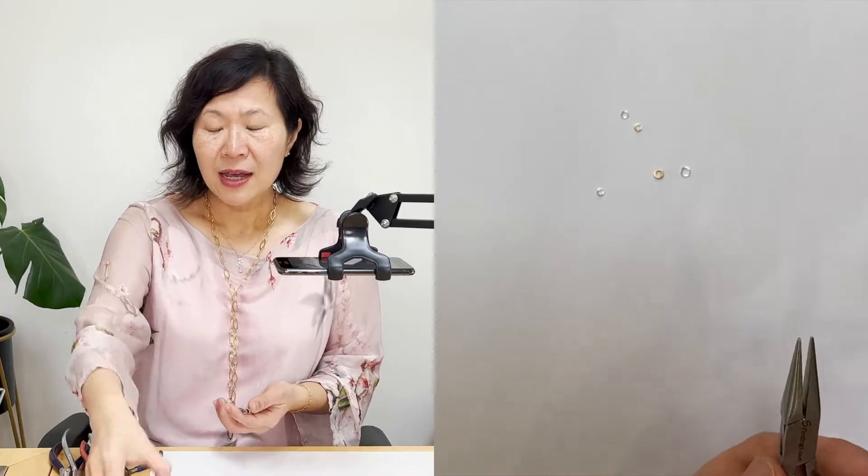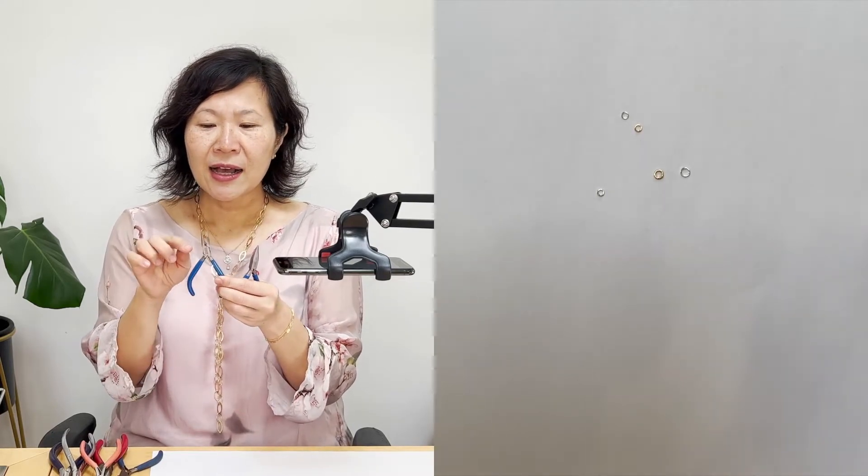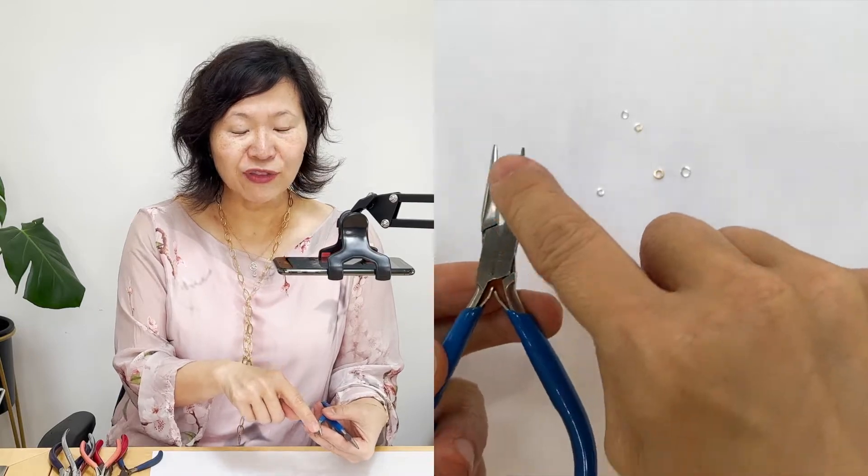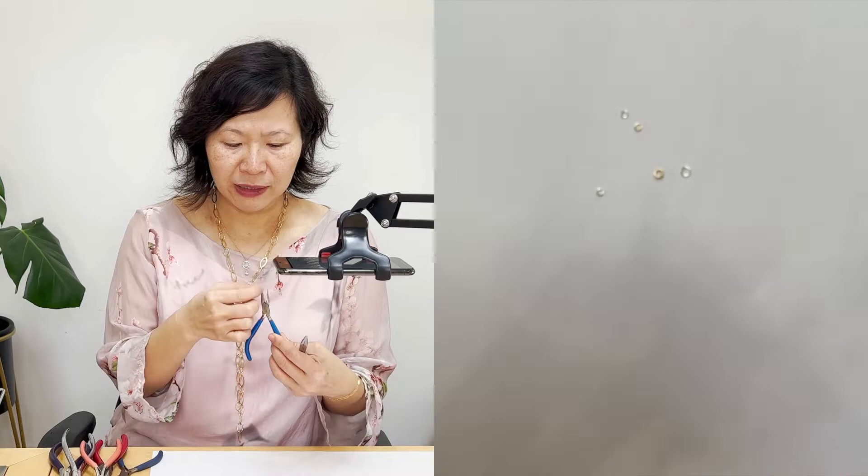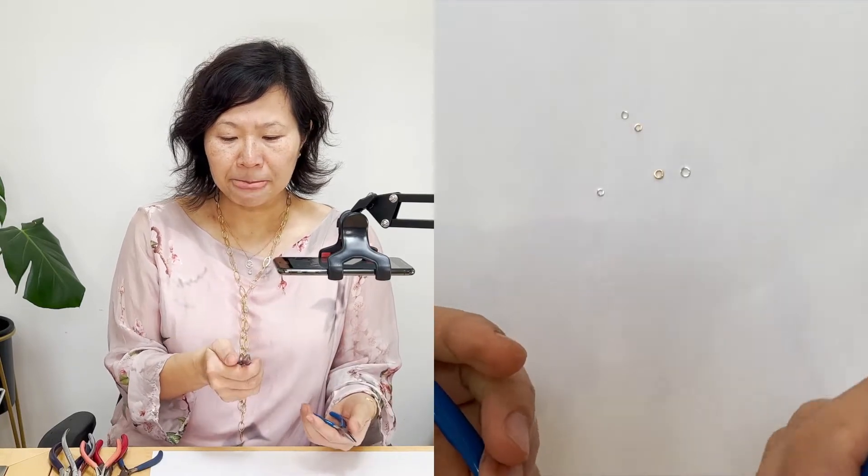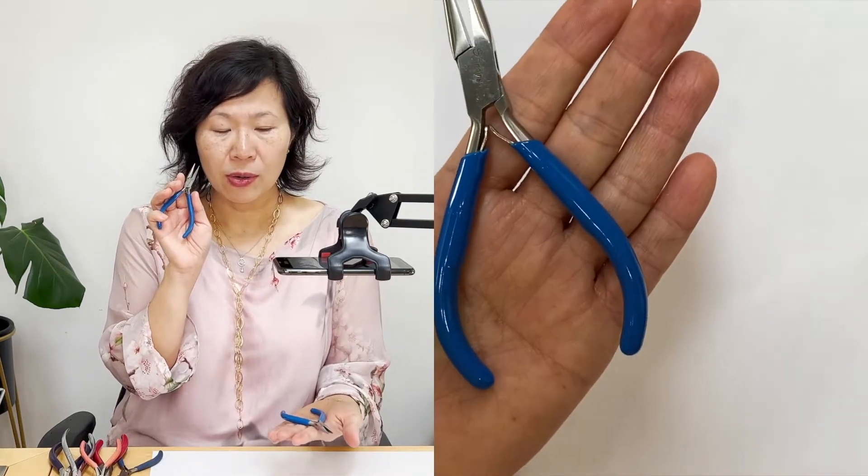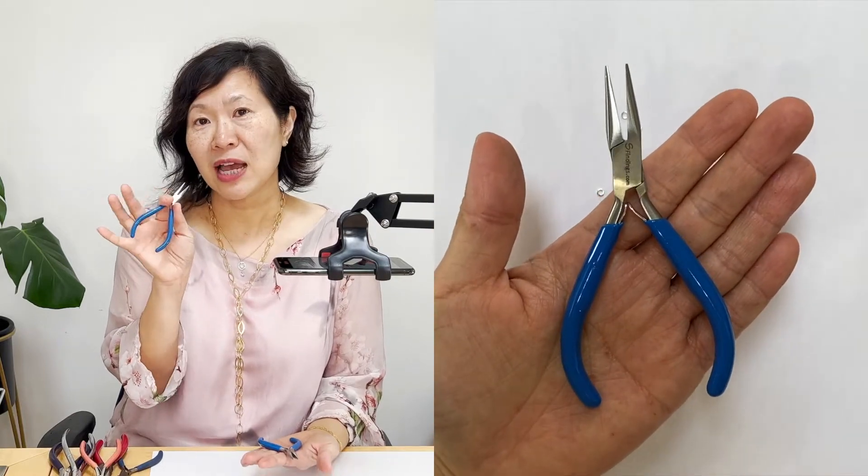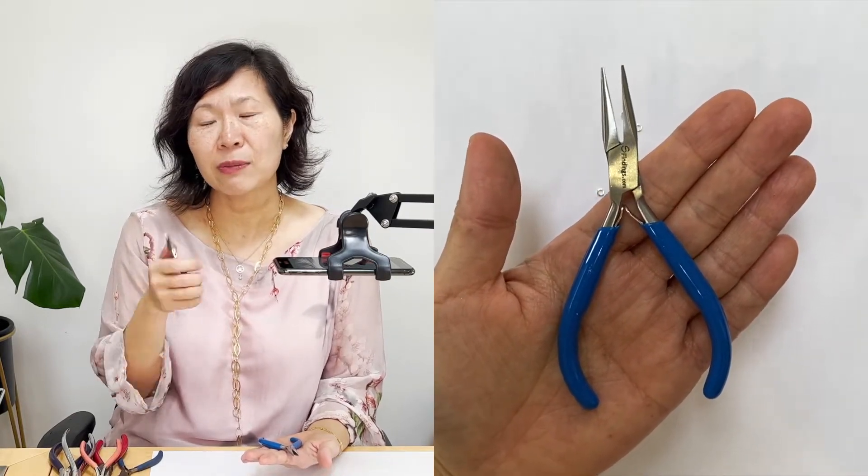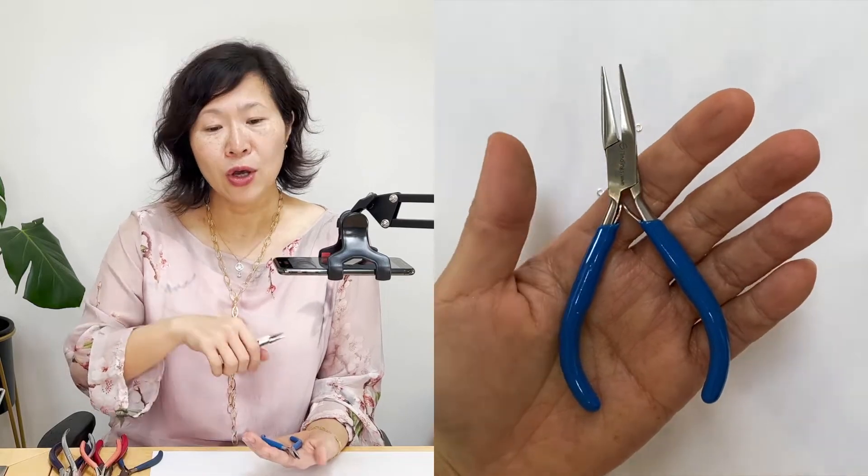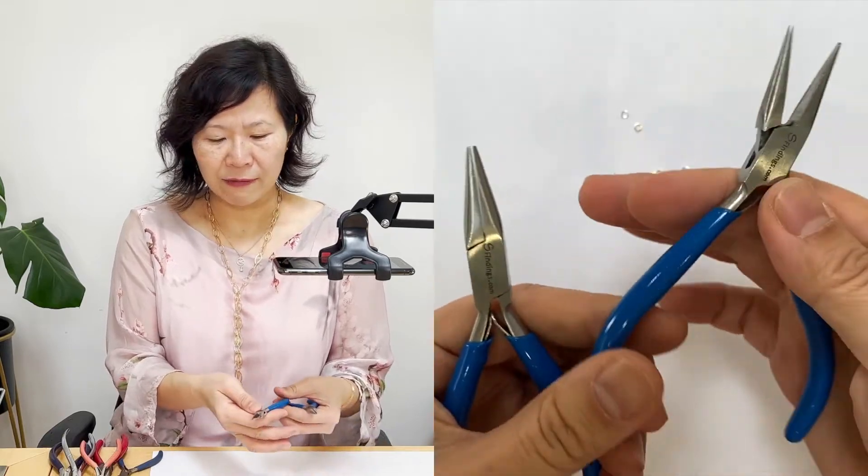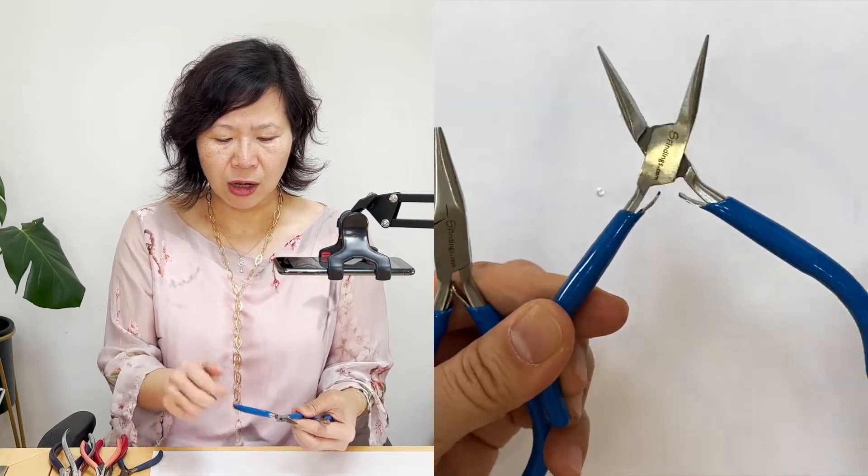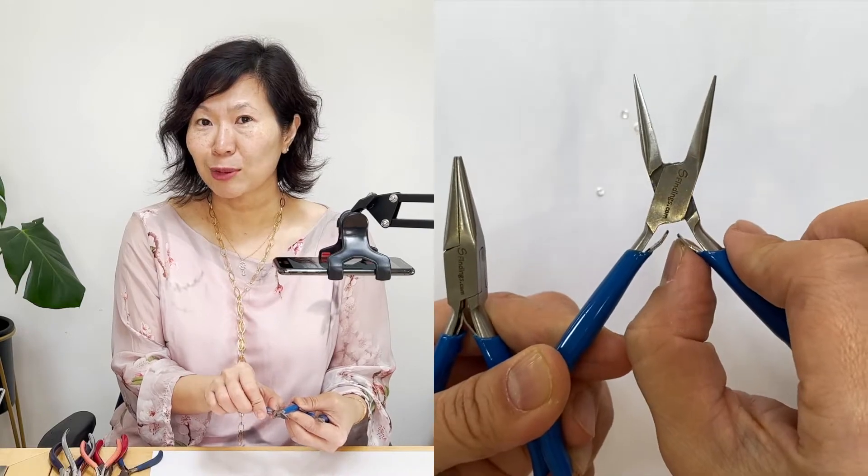So they're called chain nose pliers, usually for chain mail. And you want a flat edge, totally flat. It should work with the size of your hand grip. Don't get anything too heavy because after a while you're going to hurt your wrist. Using it a long time, you're going to develop carpal tunnel syndrome.